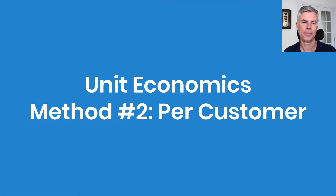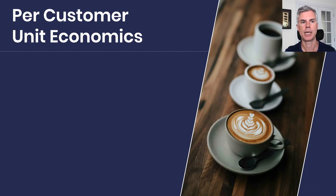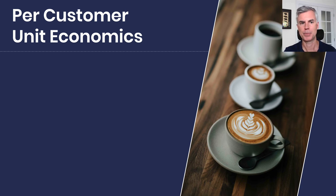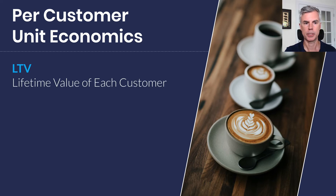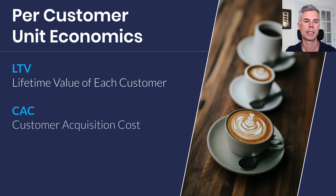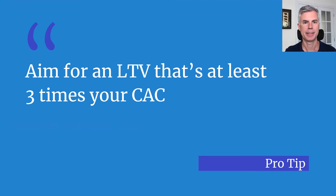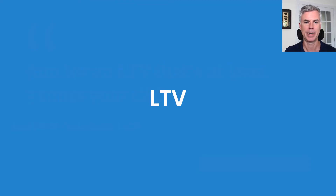So that's the per unit unit economics. Method two is per customer — more of a subscription model where you're looking at the lifetime and lifetime value. We'll have two core values for this method: one is the lifetime value of each customer, and the second is the customer acquisition cost. These two metrics work together to give us our per customer unit economics. In the startup world, aim for an LTV — lifetime value — that's at least three times your CAC — customer acquisition cost.